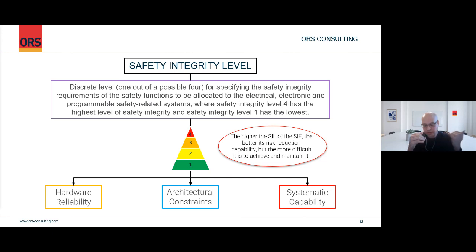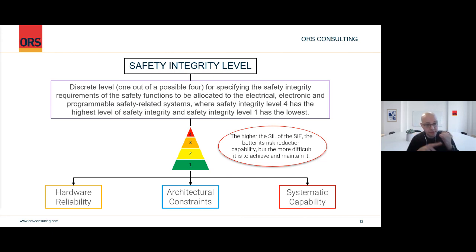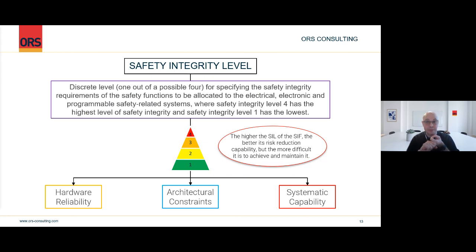SIL is not a probability of failure on demand — probability of failure on demand is part of SIL, but it's not all of it. To achieve SIL, you need three things: hardware reliability (that is, your probability of failure on demand), architectural constraints (how many redundancies you have in your safety instrumented function in each of the elements), and systematic capability (whether you are controlling all the potential systematic failures which could occur within the safety instrumented function).